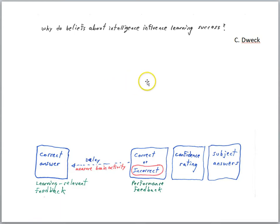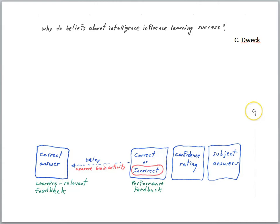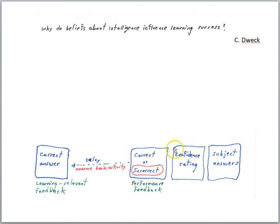It's time to look at the actual research. The title of the article is called 'Why Do Beliefs About Intelligence Influence Learning?' and this is research by Carol Dweck and her colleagues — she was instrumental in alerting us to the significance of mindsets. The situation is as follows: imagine the subjects are in front of a computer screen, and at the same time they are having their brain activity measured. The flow of time goes from right to left. The subject is first given some kind of question, then they have time to answer, then they're asked a confidence rating. Then they get performance feedback — were they correct or incorrect? And then there's a delay, and it's in this period of time that scientists are very interested in measuring brain activity.